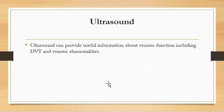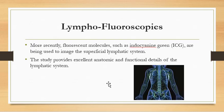Ultrasound provides useful information about venous function including DVT and venous abnormalities — it is used to exclude venous causes. Lymphofluoroscopy is a more recent technique using fluorescent molecules such as indocyanine green to image the superficial lymphatic system, providing excellent anatomical and functional detail.